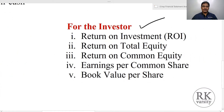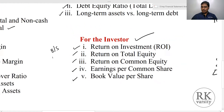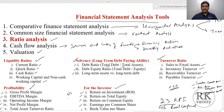Finally, from the investor's perspective, we are covering five ratios: return on investment using one balance sheet of a company and using both balance sheet and income statement, then return on total equity, return on common equity, earnings per share, and book value per share. In all, we are covering 23 key performance indicators.